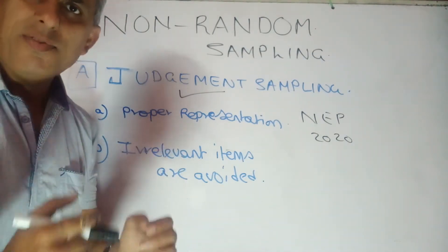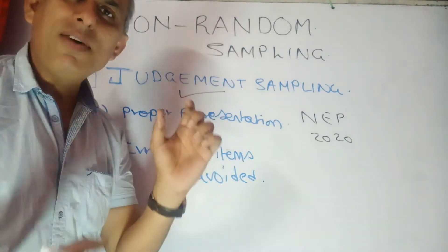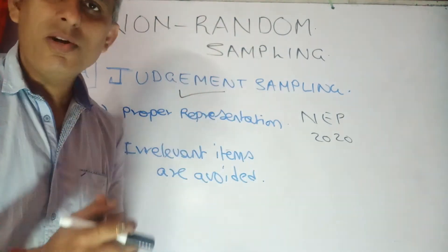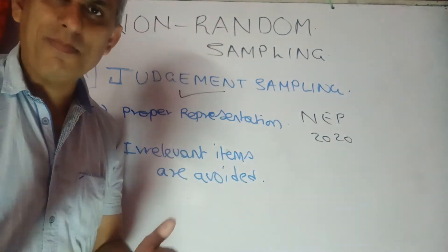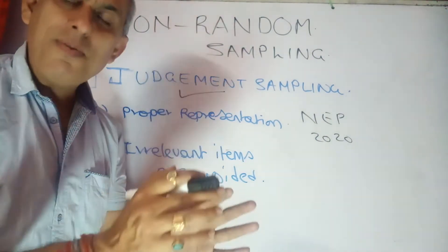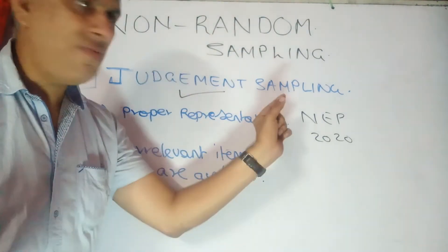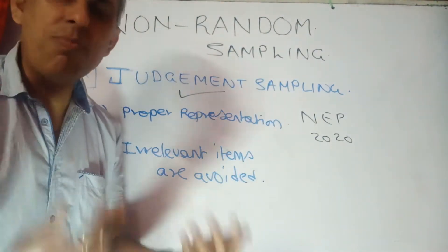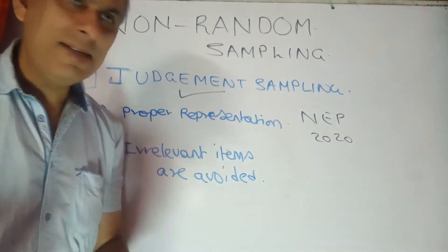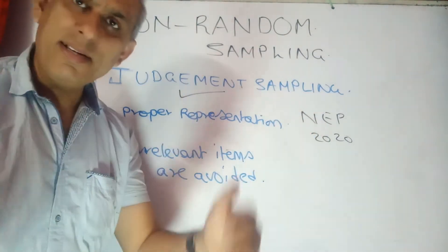Now, if a sample has to be picked to understand whether the policy is being accepted with a thumbs up or has generally been criticized by the people, we have to take a sample based on people who understand the small nuances of this National Education Policy. It's no point asking, for example, Virat Kohli to be part of the sample when he might have limited knowledge of NEP.